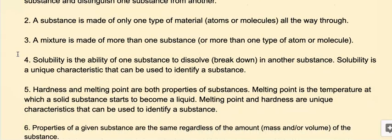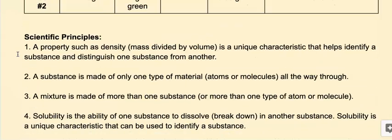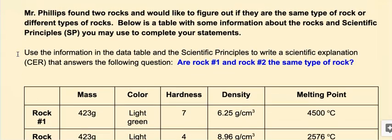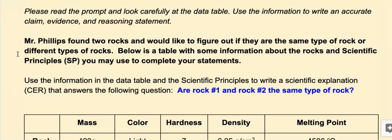Once you've looked at all that information, you have to start thinking about what information do I need to answer my question? Our background information says Mr. Phillips found two rocks and would like to figure out if they are the same type of rock or different types of rocks. Below is a table with some information about the rocks and scientific principles you may use to complete your statements of claim, evidence, and reasoning.